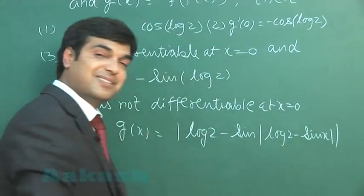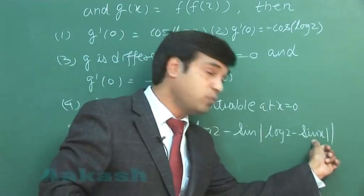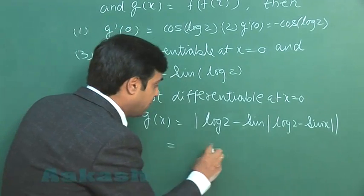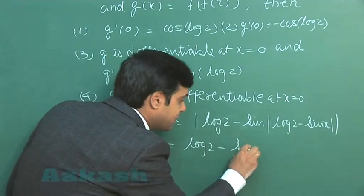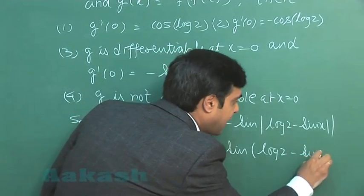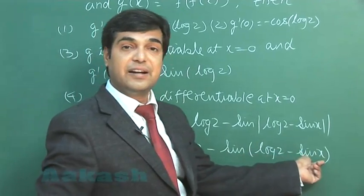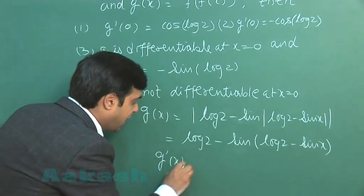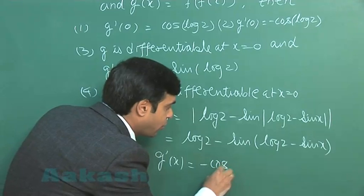Simplifying, we can write g(x) as log(2 minus sin(log(2 minus sin x))), because around 0, log 2 is greater than sin x, so the modulus signs can be removed.